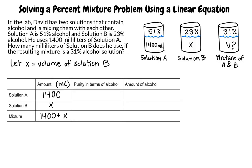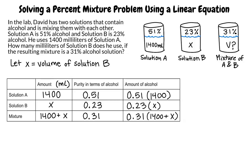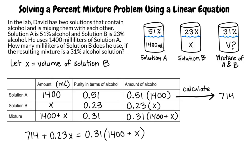Now we will enter the purity in terms of alcohol into the third column and convert the percentages to decimals. We will multiply horizontally to find the amount of alcohol in solution A, B, and the mixture, and enter those values into the last column. The amount of alcohol in solution A is 0.51 times 1400, and the amount of alcohol in solution B is 0.23 times x. The amount of alcohol in the mixture is 0.31 times the quantity 1400 plus x.